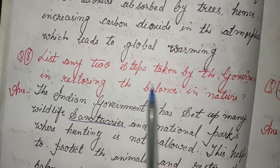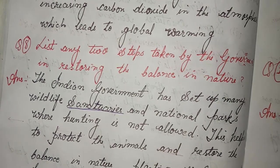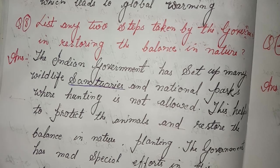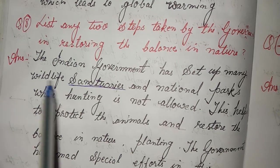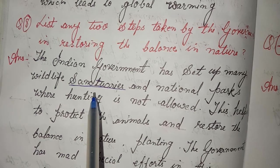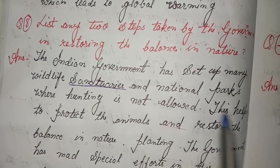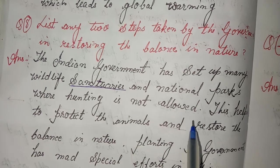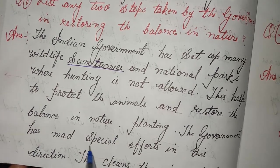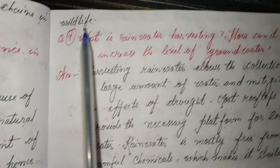Eight: List any two steps taken by the government in restoring the balance of plants in nature. Answer: The Indian government has set up many wildlife sanctuaries and national parks where hunting is not allowed. This helps to protect the animals and restore the balance in nature. The government has also made special efforts in planting trees, which cleans the air and protects wildlife.